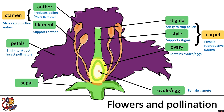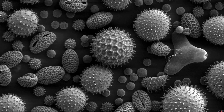Finally, at the bottom, there is the sepal, which are leaves that protect the bud before flowering. The pollen produced by the anther comes in many different shapes and sizes. Some are sticky and spiky so that they can attach to insects, and others are very small and light so they can be transferred by the wind.